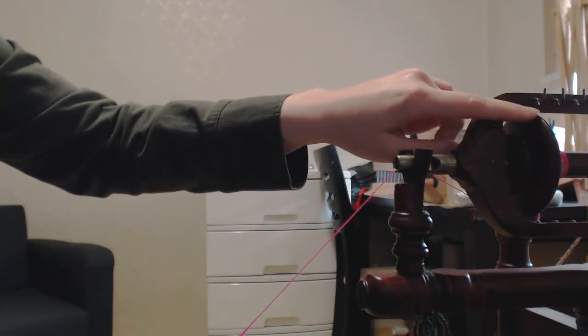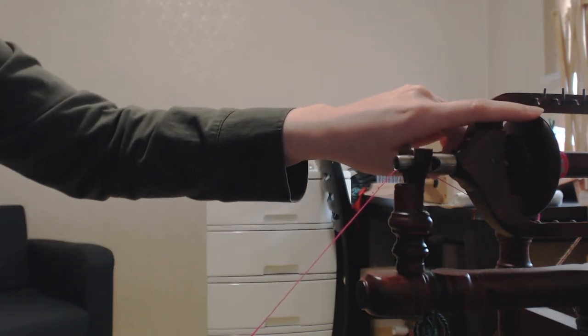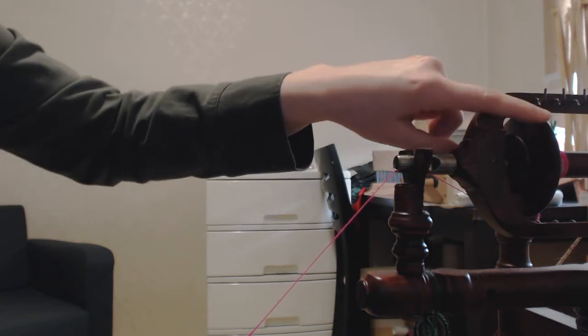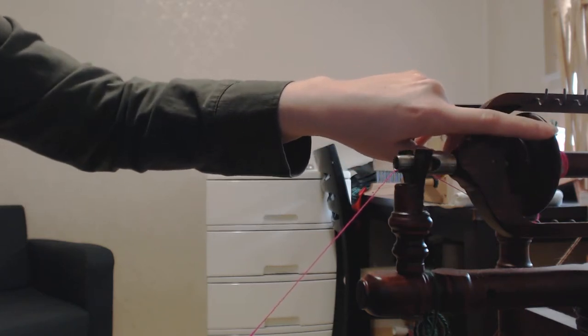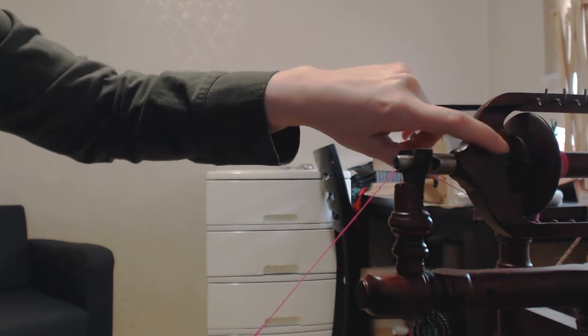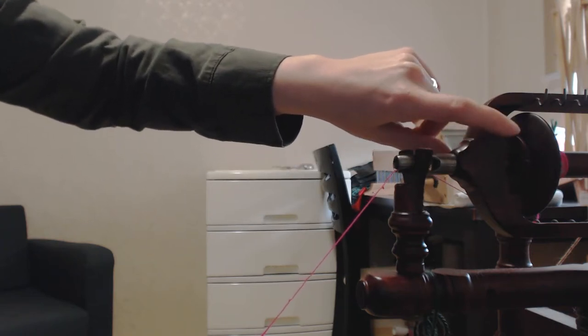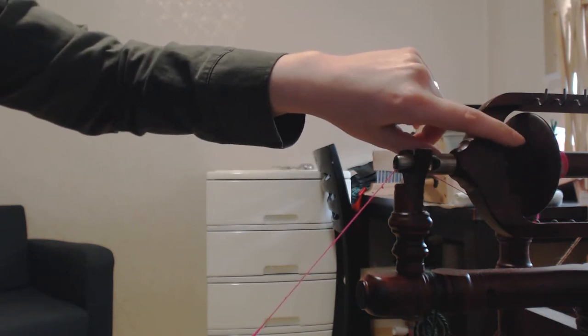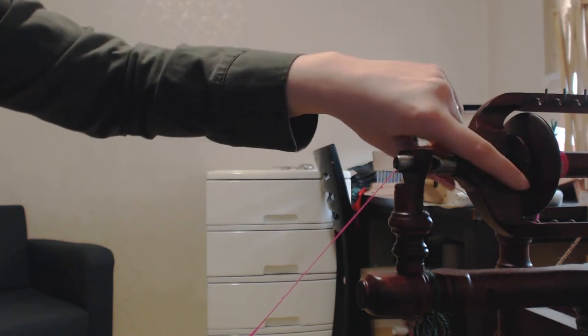Now on Kromsky, and I think actually most bobbins for spinning wheels, the bobbin, this part right here where the yarn goes, there's two sides to the bobbin. There's usually a thicker side, it has a larger whorl, and on the other side, one that's smaller.